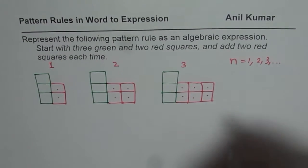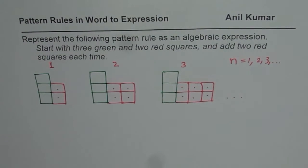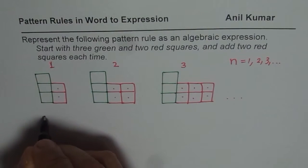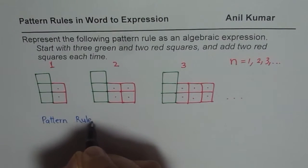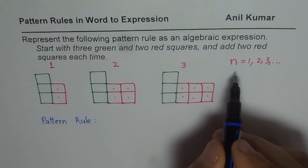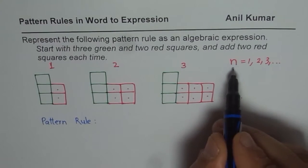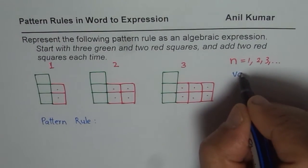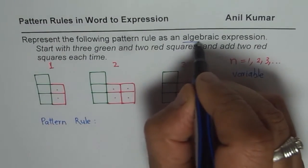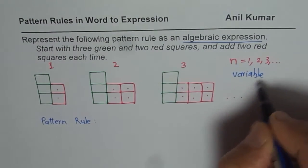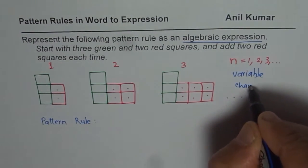So that is the kind of pattern which we are having. Now the question here is write this as an algebraic expression. So you need to provide a pattern rule. In this pattern rule, I am using variable n for things which are changing. Since we have a variable, it is called an algebraic expression.